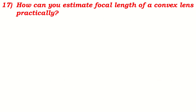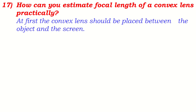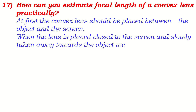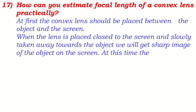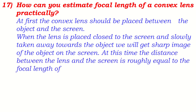How can you estimate the focal length of a convex lens practically? First, the convex lens should be placed between the object and the screen. When the lens is placed close to the screen and slowly taken away towards the object, we get a sharp image of the object on the screen. At this point, the distance between the lens and the screen is roughly equal to the focal length of the given convex lens.